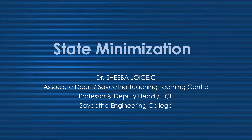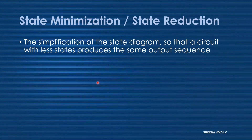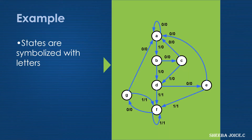State minimization, also called state reduction, is the simplification of the state diagram so that a circuit with fewer states produces the same output sequence. For example, let us consider this state diagram — the states are symbolized with letters and it has seven states. We can see the input and the corresponding output for each state.